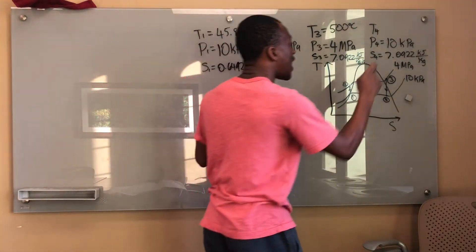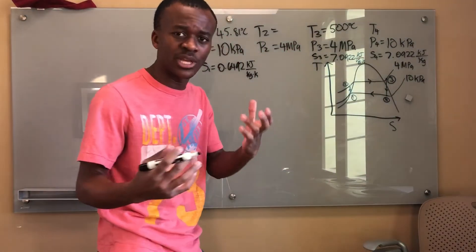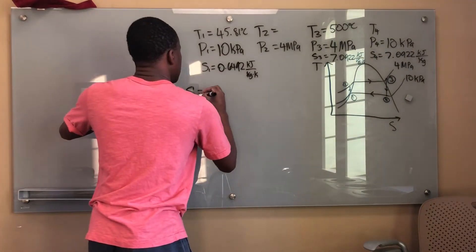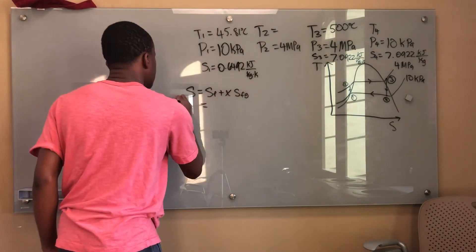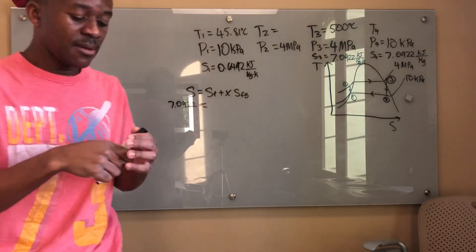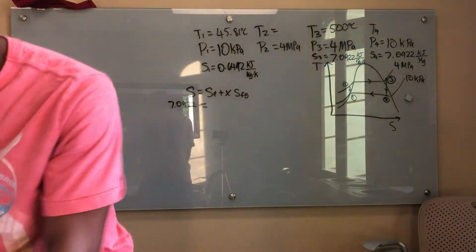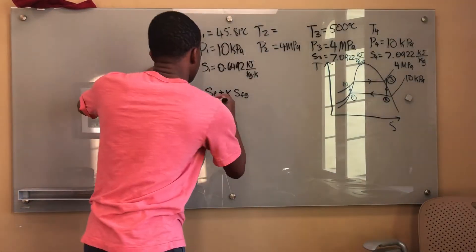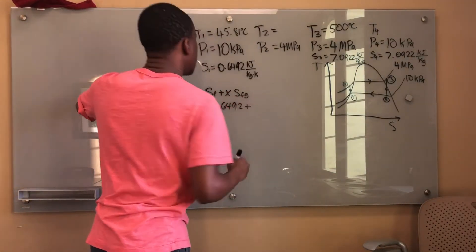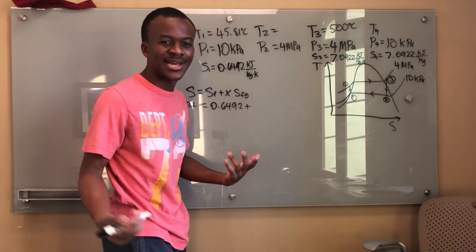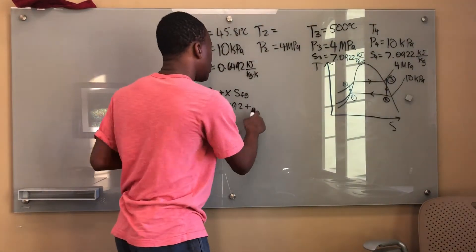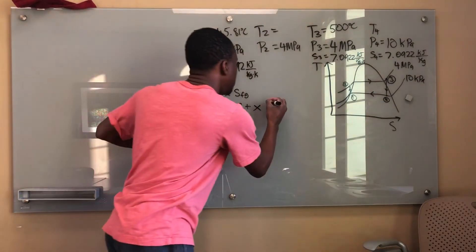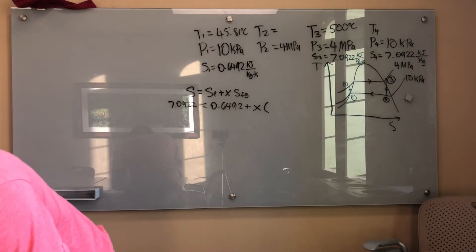Now what I can do is find my sf and sg at this point and use the quality equation to find the quality. I know that s equals sf plus x times sfg. My s at 10 kilopascals is 7.0922. My sf has to be sf at 10 kilopascals, which is s1, which is sf at 10 kilopascals. Conveniently I'm using sf at 10 kilopascals to find my quality here. My sfg I can get from the graph, so sfg at 10 kilopascals is 7.4996.